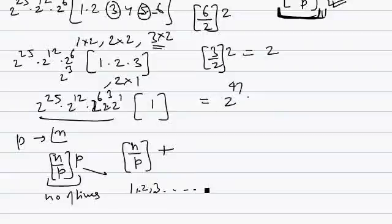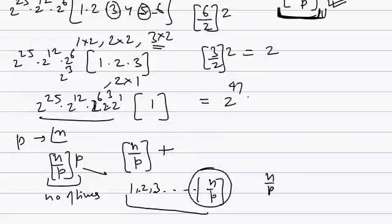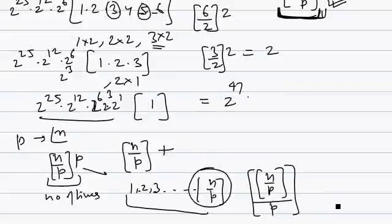It goes on till n by p, because if you write the last term like this and take p common, then left over is n by p. Now again, to see the number of times p is present in this product, we divide this by p and take the greatest integer. This much number of times. So we add this to this.